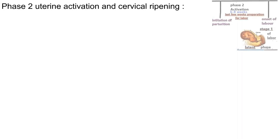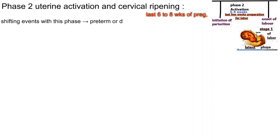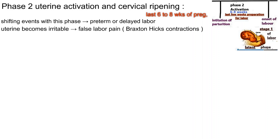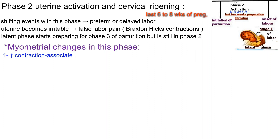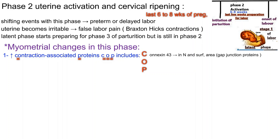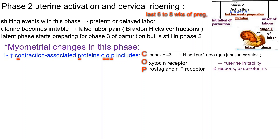Phase 2: Uterine activation and cervical ripening — a progression of uterine changes during the last 6 to 8 weeks of pregnancy. Shifting events in this phase can cause either preterm or delayed labor. The uterus becomes irritable, leading to false labor pain and Braxton Hicks contractions. The latent phase begins preparing for phase 3. Myometrial changes include increased expression of contraction-associated proteins (CAPs): connexin 43, gap junction proteins, oxytocin receptors, and prostaglandin F receptors, increasing uterine irritability and responsiveness to uterotonins.